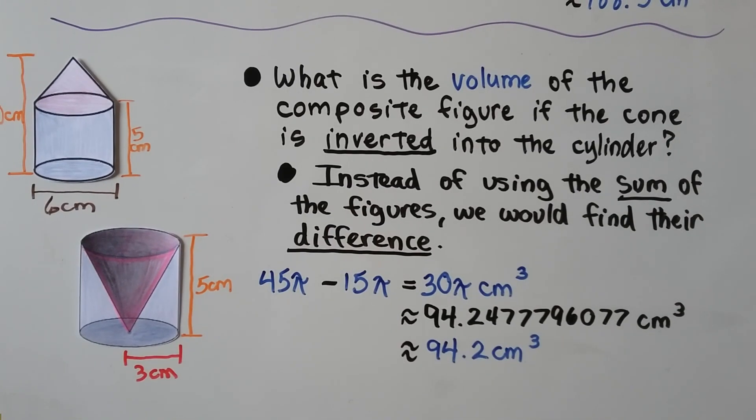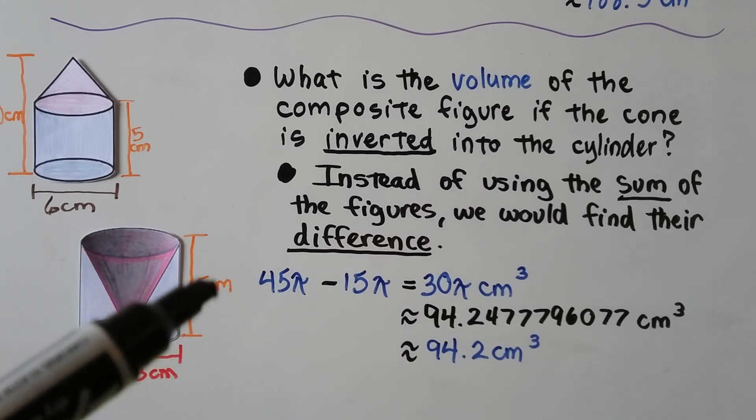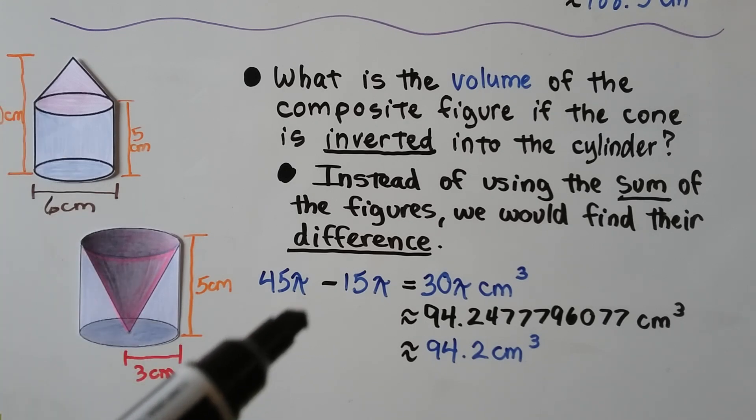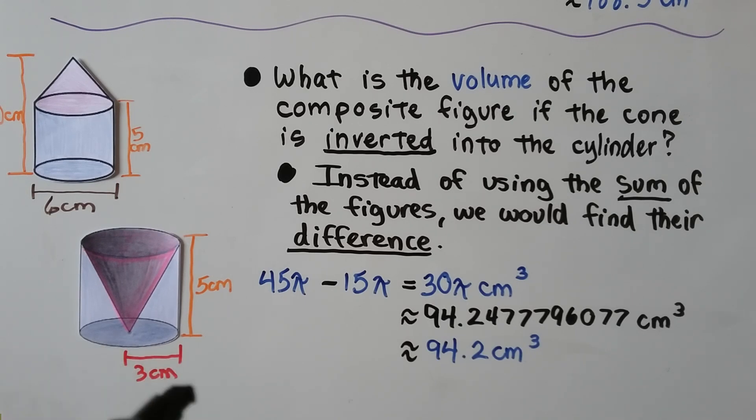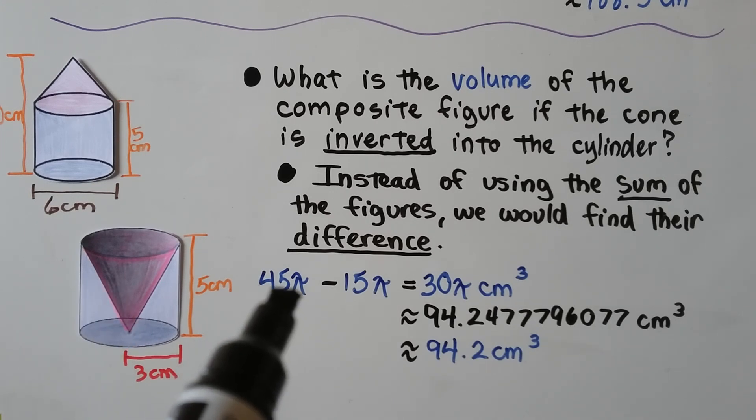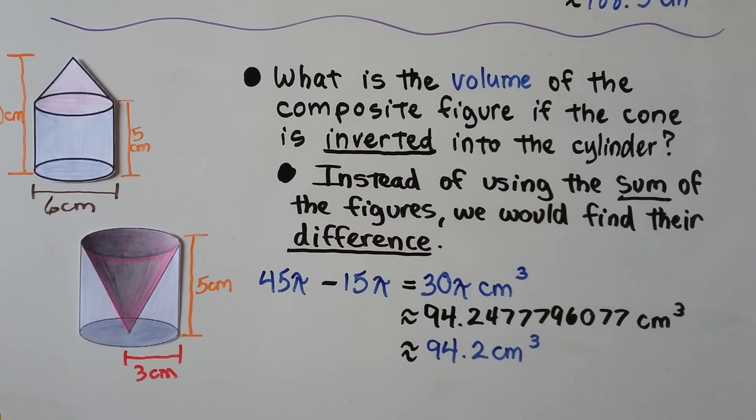But what is the volume of the composite figure if the cone is inverted into the cylinder? Well, instead of using the sum of the figures, we would find their difference. We knew the cylinder was 45π and the cone was 15π. If they had the same diameter, same radius, same height. It's just the cone is now inverted. We would do 45π minus 15π, which is 30π centimeters cubed, which is approximately 94.2 centimeters cubed.